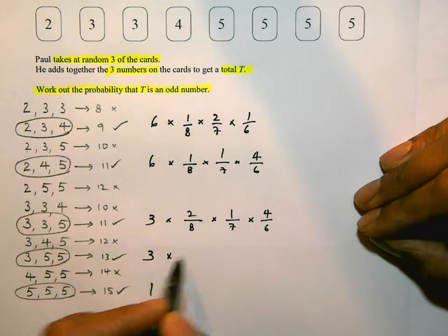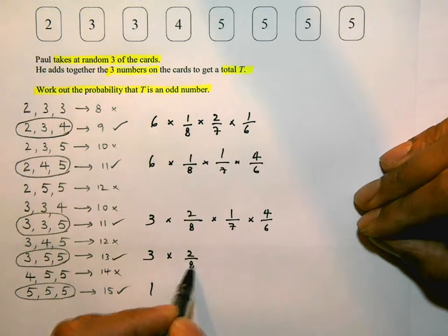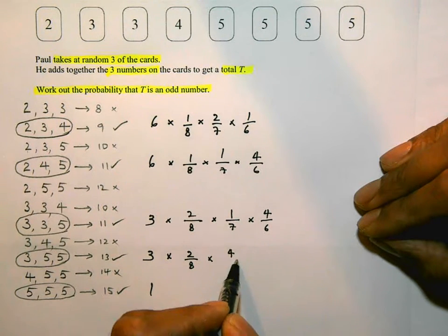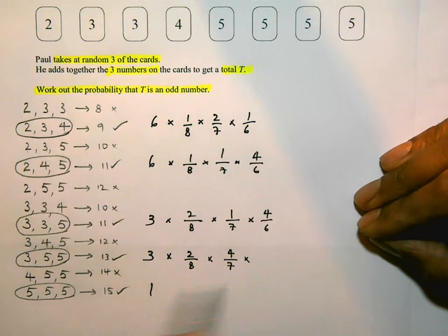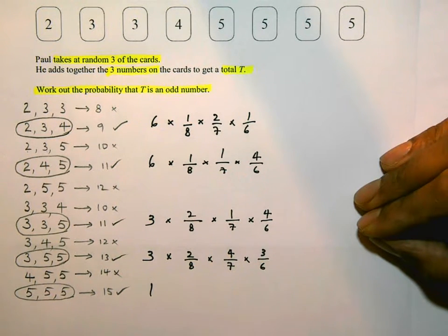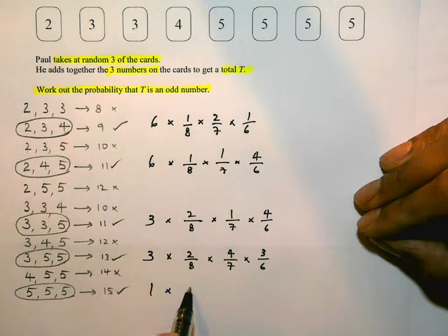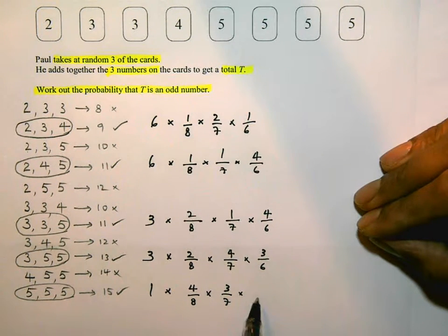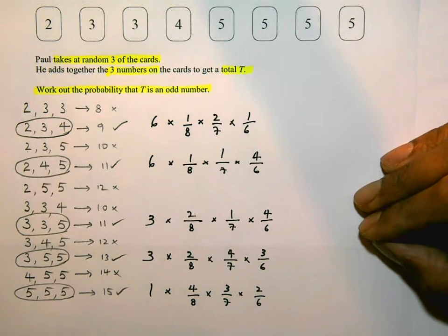For picking 3, 5, and 5: the probability of picking a 3 is 2/8, the probability of picking a 5 is 4/7, and then the probability of picking the next 5 is 3/6. And for the last one — 5, 5, and 5: the probability of picking the first 5 is 4/8, the second 5 is 3/7, and the third 5 is 2/6.